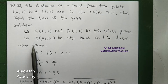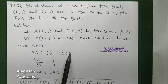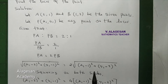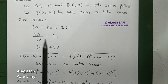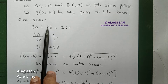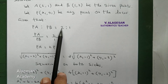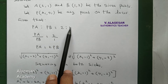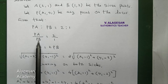What is given? PA to PB equal to 2 is to 1. Now, the ratio gives us PA by PB equal to 2 by 1. Cross multiplying, PA equal to 2PB.